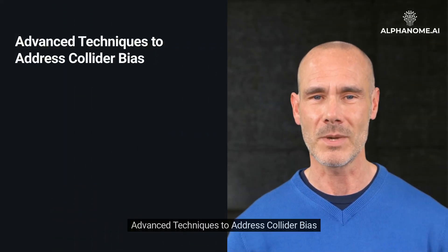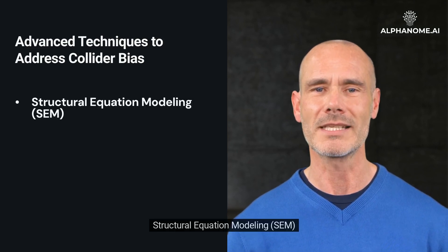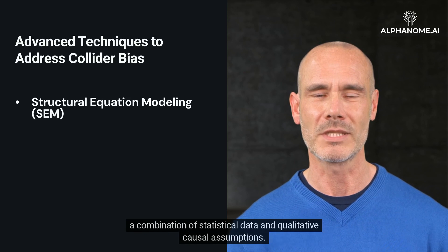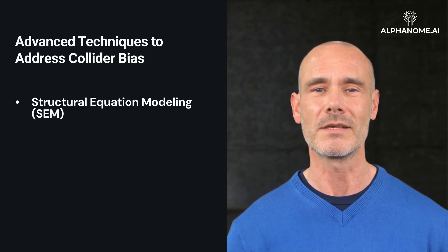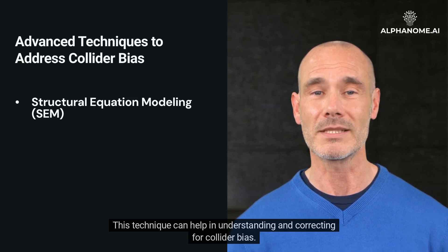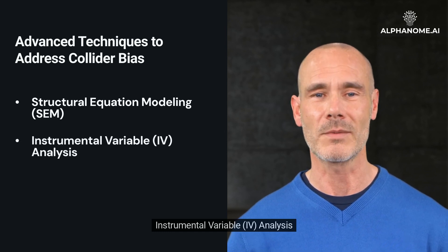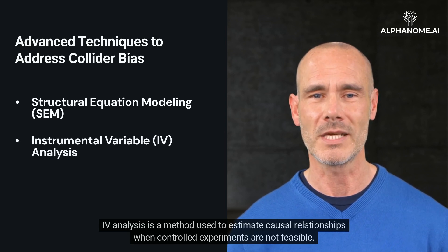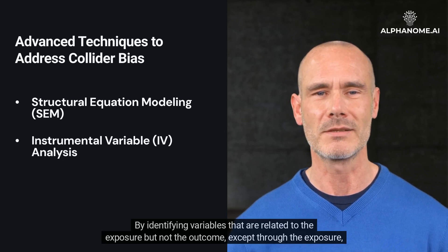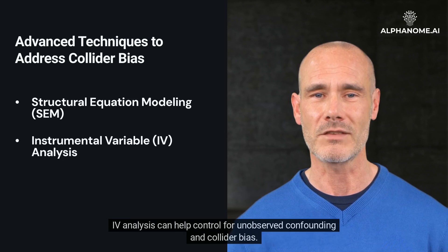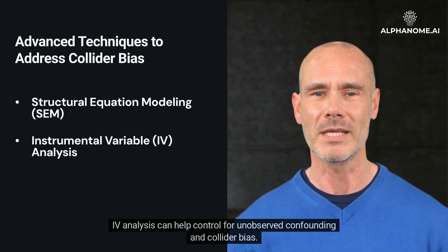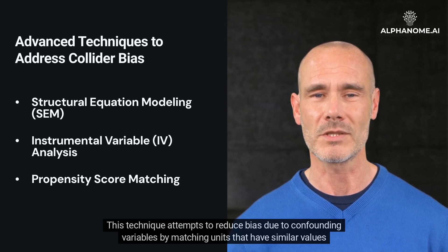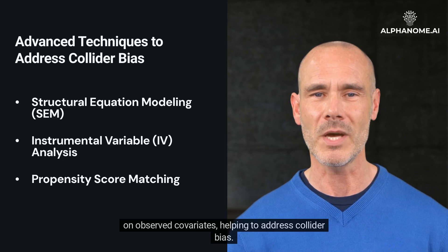Advanced Techniques to Address Collider Bias. Structural Equation Modeling (SEM) is a statistical technique that allows for the estimation and testing of causal relationships using a combination of statistical data and qualitative causal assumptions, helping to understand and correct for collider bias. Instrumental Variable (IV) Analysis is a method used to estimate causal relationships when controlled experiments are not feasible; by identifying variables related to the exposure but not the outcome except through the exposure, IV analysis can help control for unobserved confounding and collider bias. Propensity Score Matching attempts to reduce bias due to confounding variables by matching units with similar values on observed covariates, helping to address collider bias.